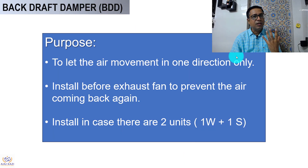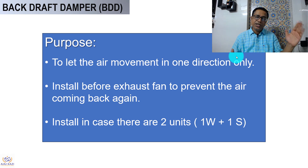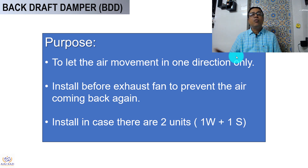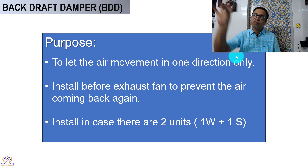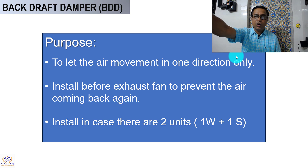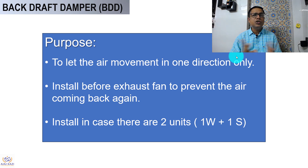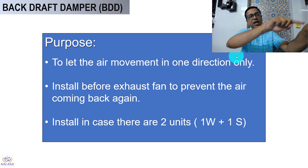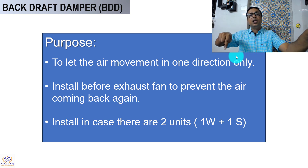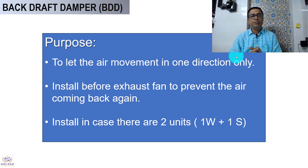Now let us look at another damper called the Back Draft Damper, or BDD. The purpose is to allow air movement only in one direction. They are installed before exhaust fans to prevent air from coming back. They are also installed when you have two units — one working and one on standby — so air from the working unit does not flow back into the standby unit. BDD prevents that.